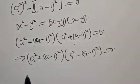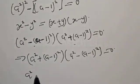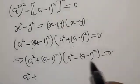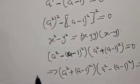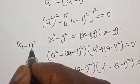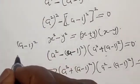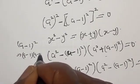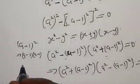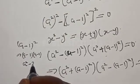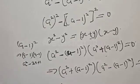Now let's open this bracket. We have A squared plus A minus 1 squared. A minus 1 squared is the same as A minus 1 multiplied by A minus 1, which gives us A squared minus 2A plus 1.